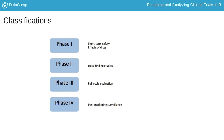Phase three is the most important phase, where the selected dose of the new drug is evaluated in a larger group of patients for efficacy and safety against a control — the standard treatment or placebo. And finally, once the drug is on the market, post-marketing surveillance is done to identify any long-term and rare side effects.